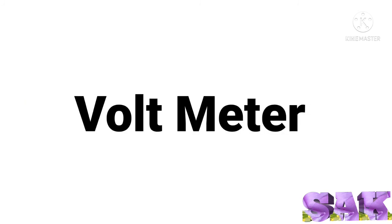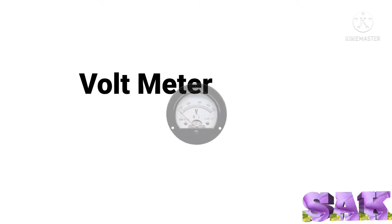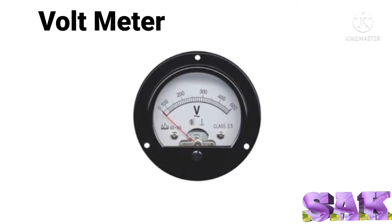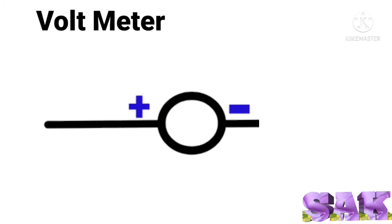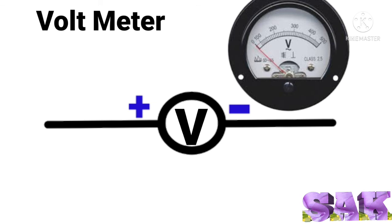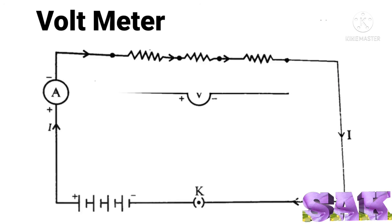Now let us see the symbol of voltmeter. Voltmeter is used to measure potential difference. Voltmeter is always connected in parallel in the electric circuit.